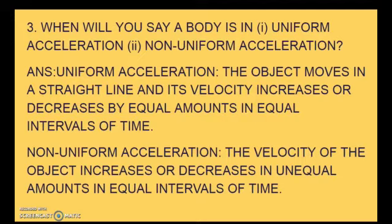Next question: when will you say a body is in uniform acceleration and non-uniform acceleration? Answer: for uniform acceleration, the body moves in a straight line and its velocity increases or decreases by equal amounts in equal intervals of time. For non-uniform acceleration, the velocity of the object increases or decreases in unequal amounts in equal intervals of time, and the body is said to be in non-uniform acceleration.